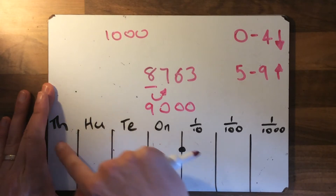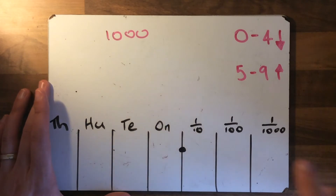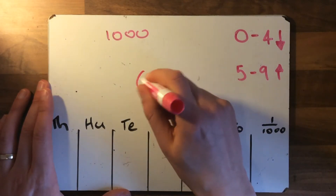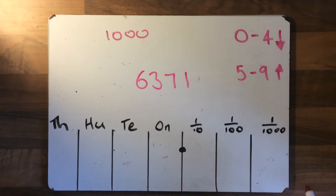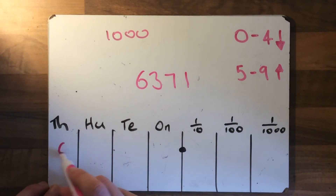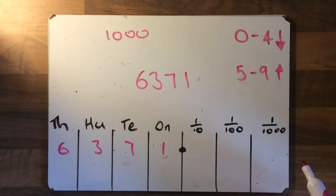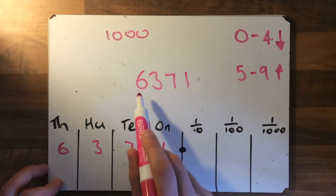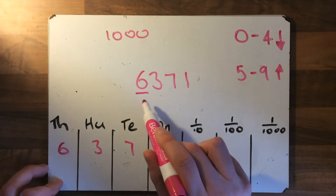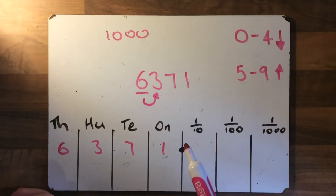So let's have a go at another one — we're rounding to the nearest thousand again, and let's have 6,371. Six thousand, three hundred and seventy-one. If I was to write this in here — so you can see, six thousand three hundred and seventy-one — you can see six is clearly the one that is in the thousands column. We're rounding to the nearest thousand, so that's the number we'll underline. Then we'll look next door to the right, into the hundreds column, and it's a three.